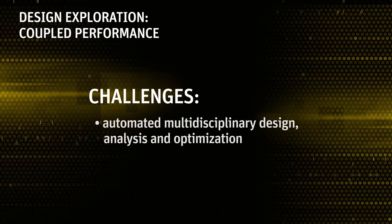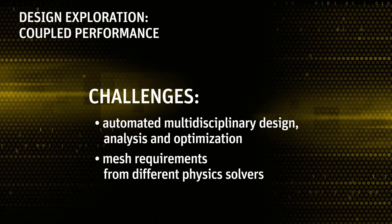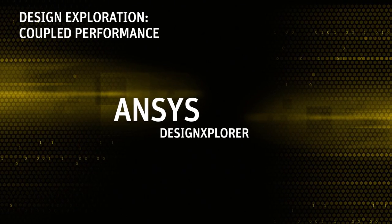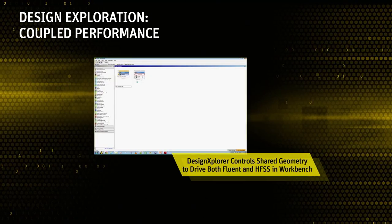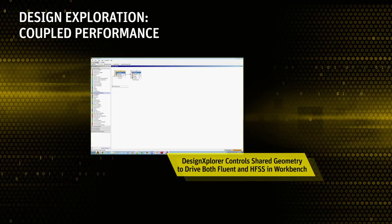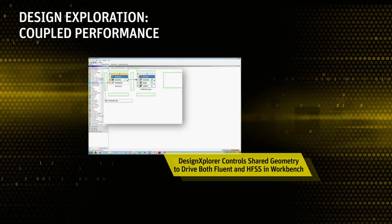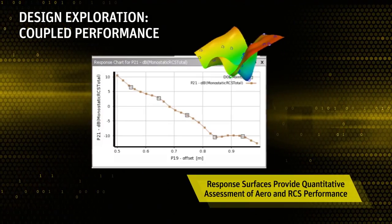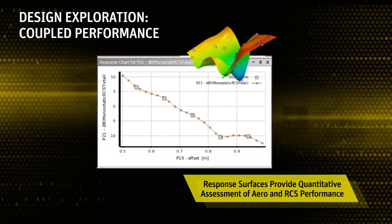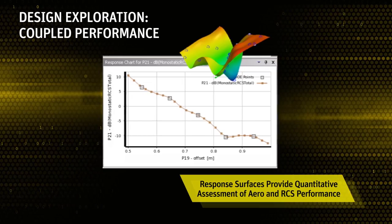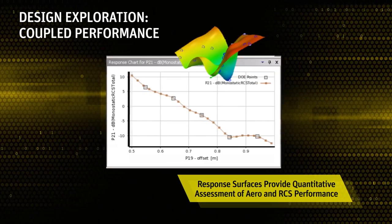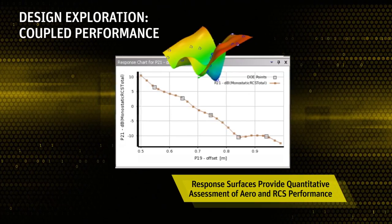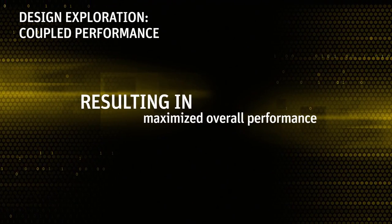The outputs from CFD and HFSS are analyzed with a common multidisciplinary design analysis and optimization tool, ANSYS Design Explorer. Design Explorer controls the parametric geometry updates shared between Fluent and HFSS so that the geometry is always consistent between the solvers. Design of experiments and response surface modules in Design Explorer provide a quantitative assessment of aero and RCS performance. The built-in optimizer enables optimization of the design over multiple objectives and constraints, resulting in maximized overall performance.